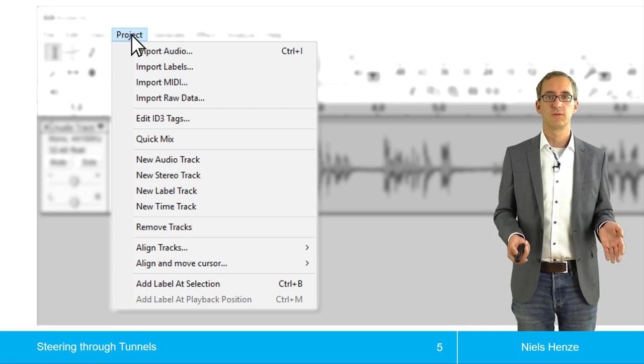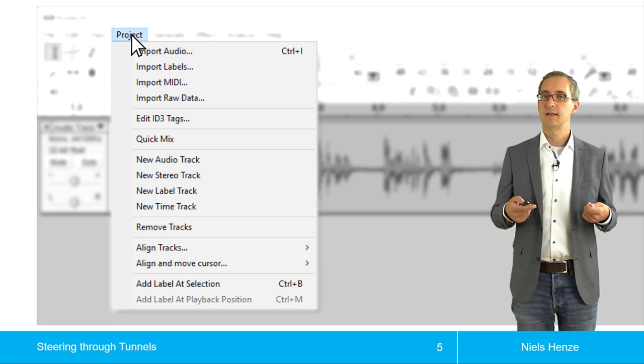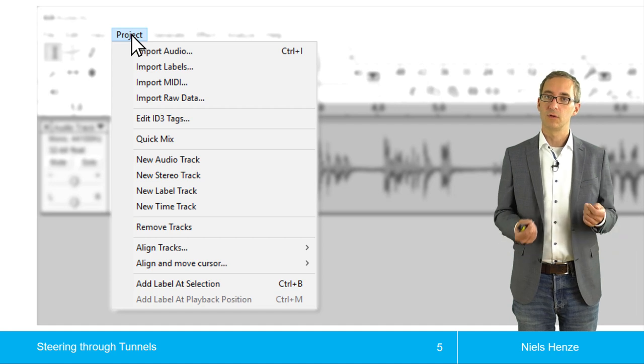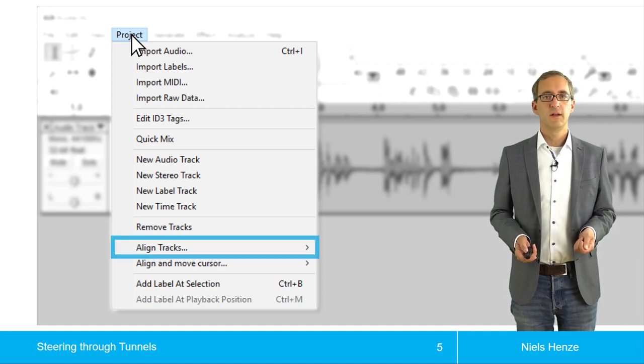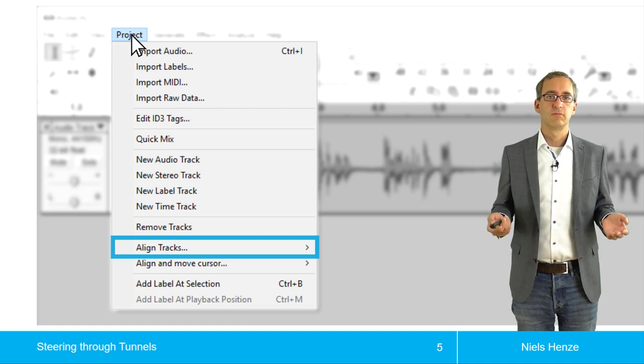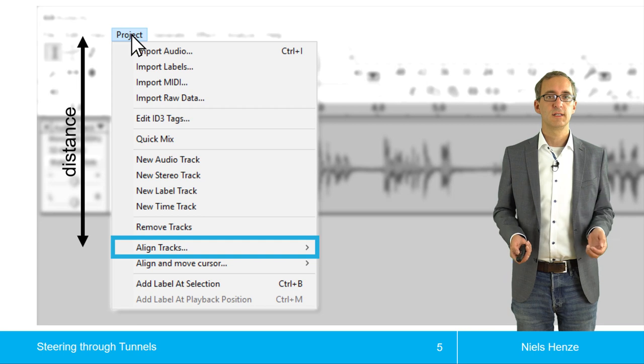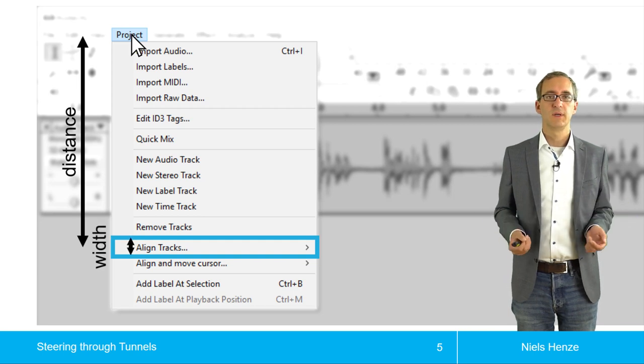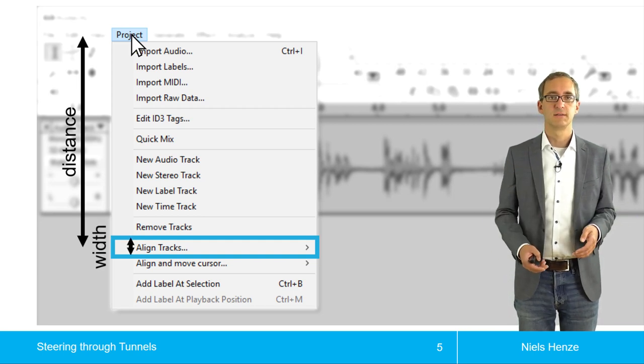So the first thing a user would have to do is select, let's say, align tracks or go there with a mouse. And for this one, we can use Fitts' law to figure out how long it takes. We only need the distance and how big the target is along this line.